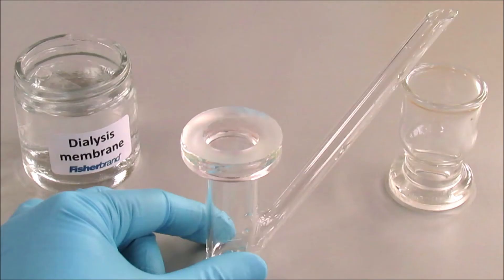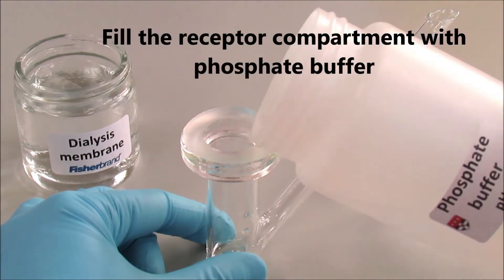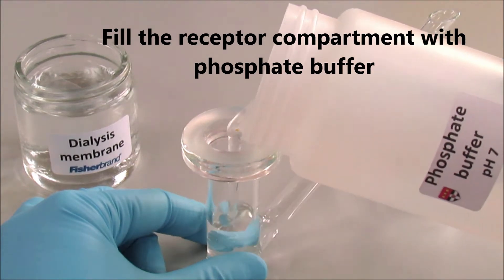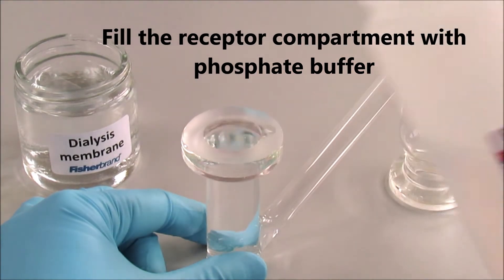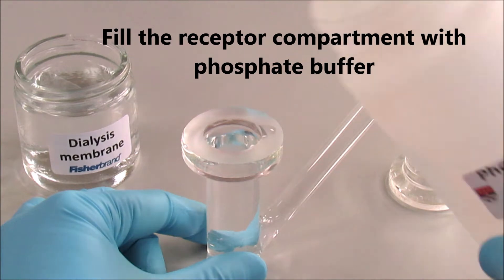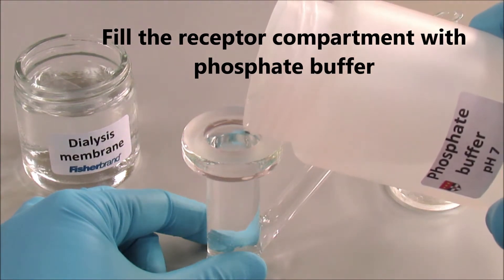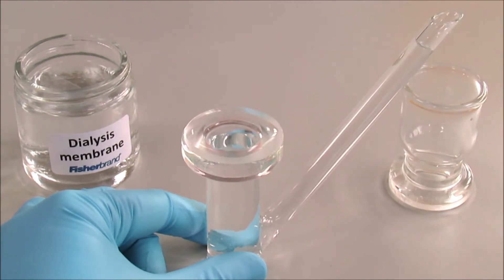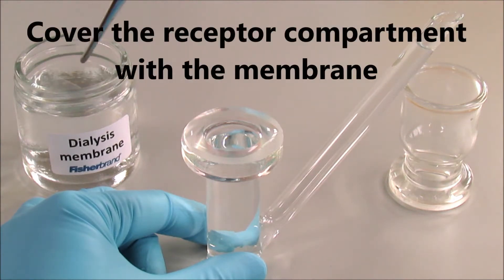Before doing that, we will fill up the receptor compartment with phosphate buffer and we need to make sure that we put a little bit of phosphate buffer on the top. Then we cover the receptor compartment with the membrane, a dialysis membrane made of cellulose.